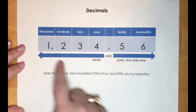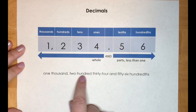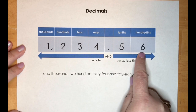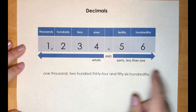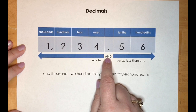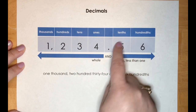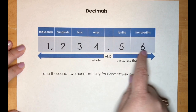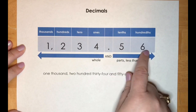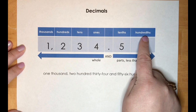If I were to read the number we have here, we have 1,234 and 56 hundredths. Notice where the decimal is — we use the word 'and' in its place. Then, just like we read regular whole numbers, we read what's behind the decimal together: we have 56, and since there are two digits, we say it's in the hundredths place.